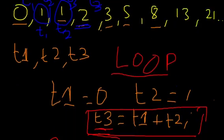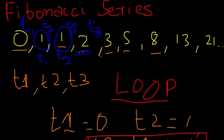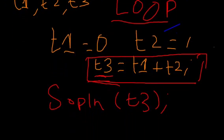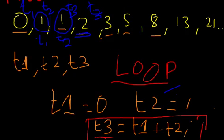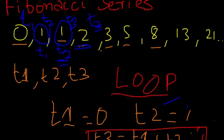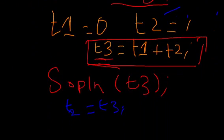So essentially, t2 has shifted one place ahead. So t2 is equal to t3, because the old value of t3 comes in the new value of t2. And then t1 has got the old value of t2, so t1 is equal to t2.